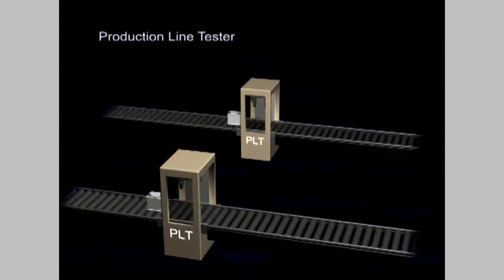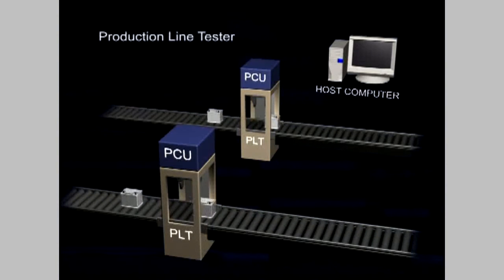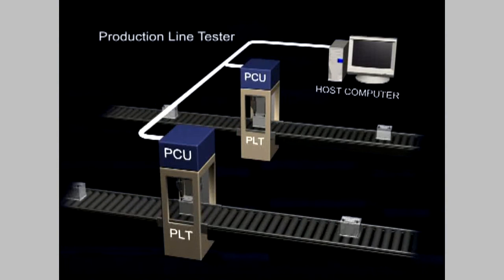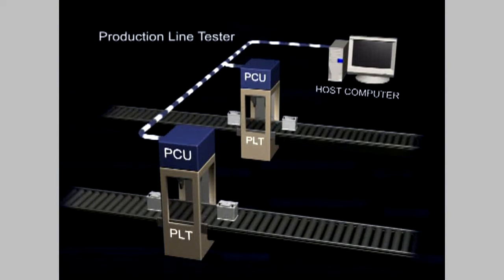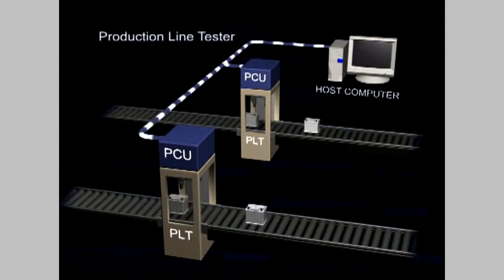The PLT system consists of a basic unit, the test head, a production line control, and a host computer. Each PLT is equipped with a programmable control unit, or PCU, connected to the host computer as a satellite computer via party line. This way, measuring data is transmitted to the host computer. The test programs transmitted from the host computer to the PCU are automatically executed by the PCU.